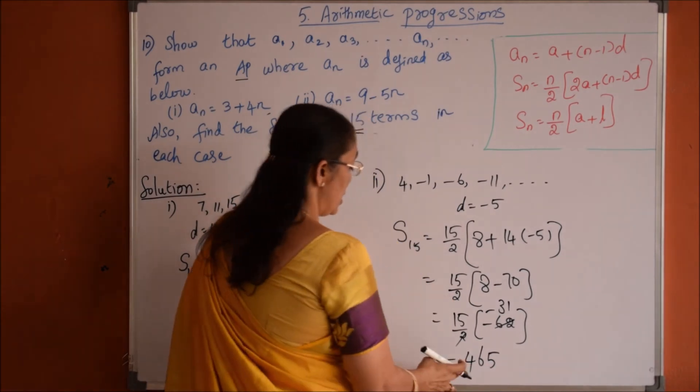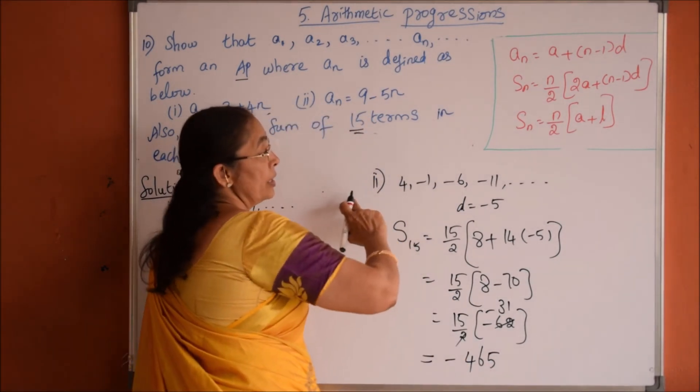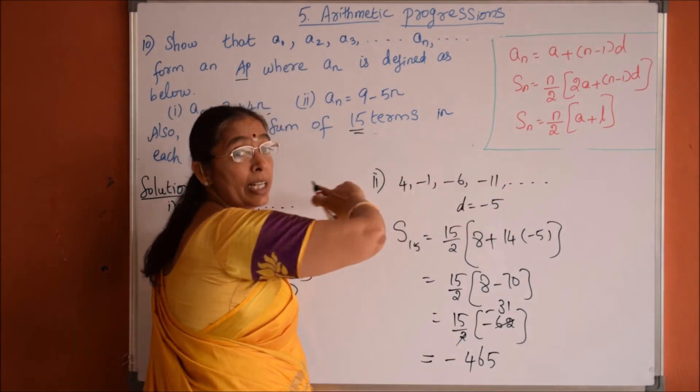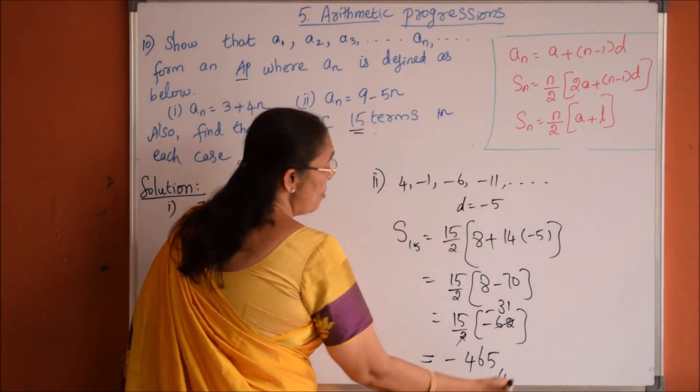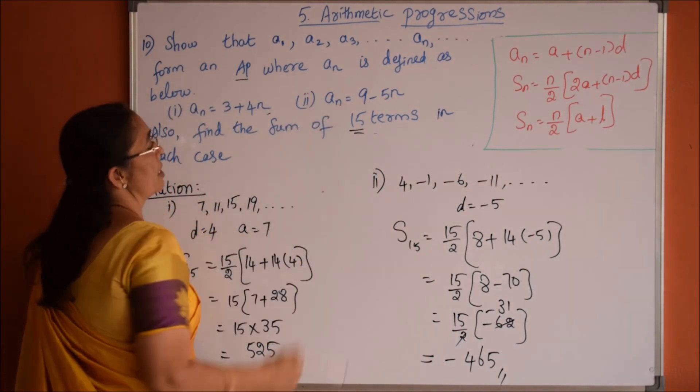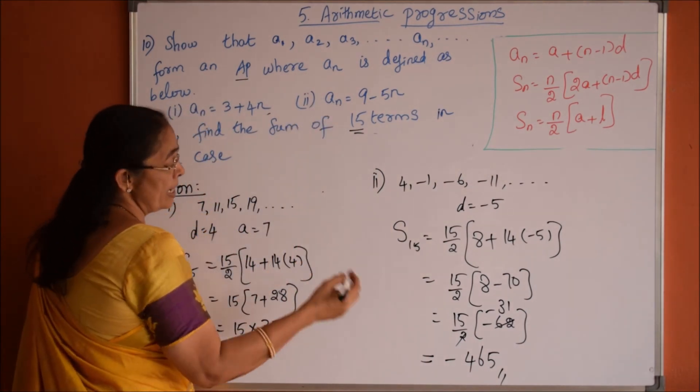So this sum will give negative because the given sequence is decreasing. The terms are decreasing here, so it is decreasing sequence. Therefore, the sum of the terms, that is sum to S_15 of this sequence a_n equals 9 minus 5n is nothing but minus 465.